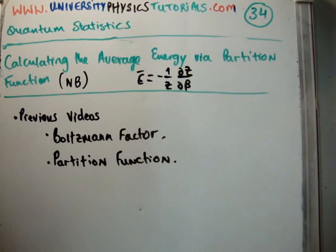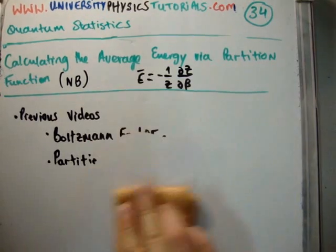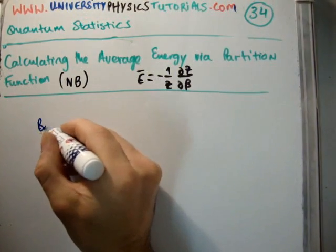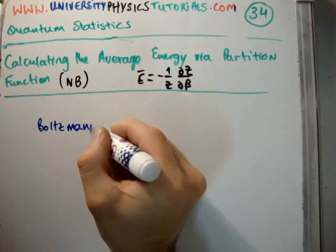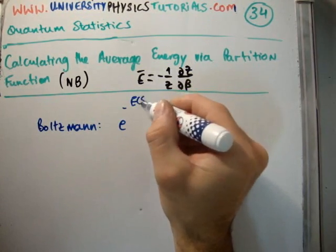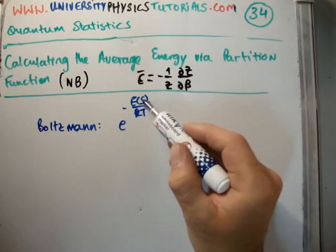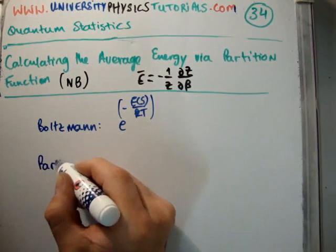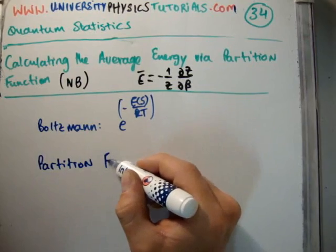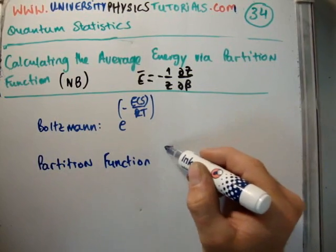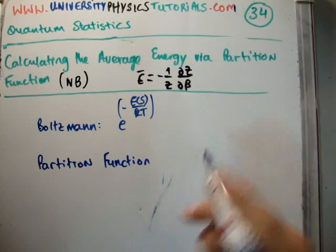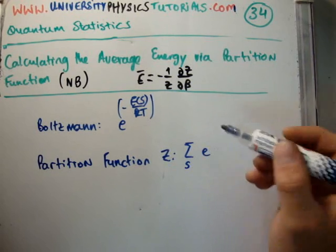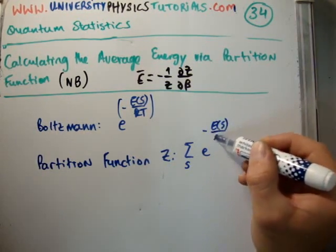In previous videos I derived the Boltzmann factor and I also derived the partition function. So let's just do a small bit of recap. The Boltzmann factor is e to the minus e sub s over kt. So it's the energy of your state in state s divided by kt—well, the negative exponential of that. And the partition function is the sum, and we give the placeholder z for the partition function. z is the sum over s of the Boltzmann factors, just to remind us.